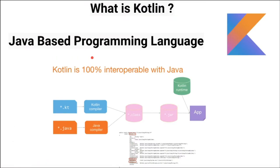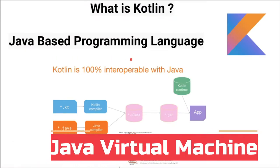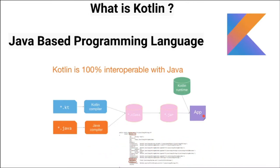Kotlin is a Java-based programming language and it runs on JVM, Java Virtual Machine. As you know, JVM helps our application to run on different operating systems. And Kotlin is 100% interoperable with Java, meaning we can call Java code from Kotlin and vice-versa. We can also use many Java libraries in Kotlin projects.